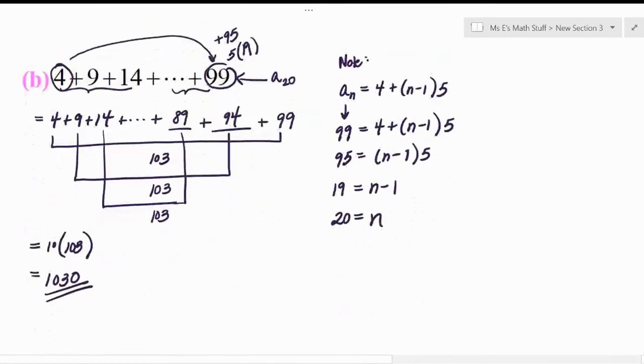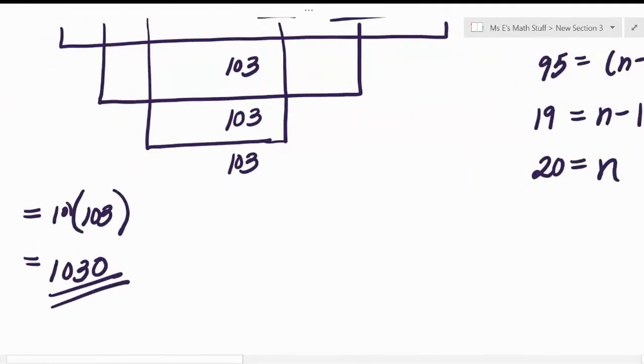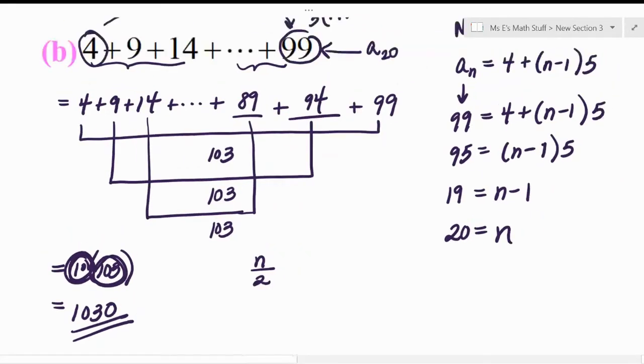Now let's see for this one, would that have worked, right? How did we get the 10? When we did 10 times 103, how did we get the 10? Well, the 10 was from the number of terms, which I eventually found out was 20, divided by two. And how did we get the 103? Well, that was just your first term plus your nth term. So that would be your first term plus your nth term. In this case, it was the 20th term. And then that, again, is the formula for the nth partial sum of, has to be an arithmetic sequence for that to make sense.